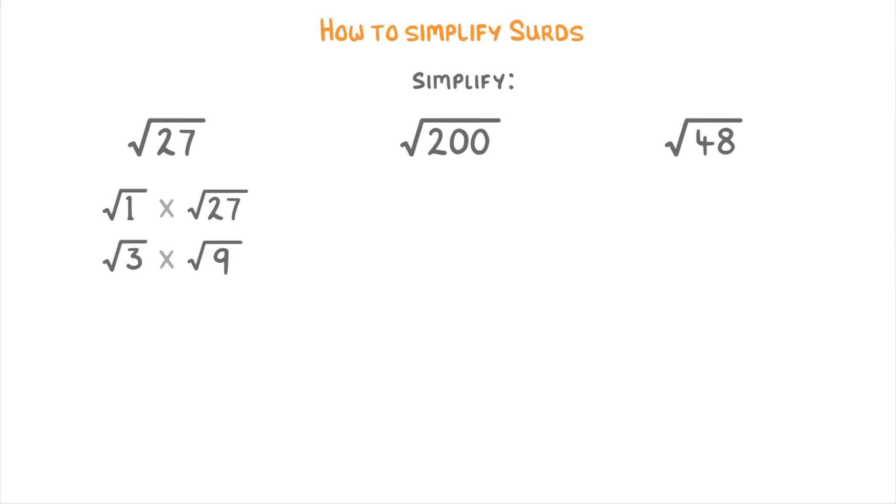Root 1 times the original number is never going to help though, so we can cross this one out. The thing to spot is that the 9 here is a square number, so we can rewrite the root 9 as a 3 to get root 3 times 3, then swap them around to get 3 times root 3, and then just write that as 3 root 3 as our final answer.